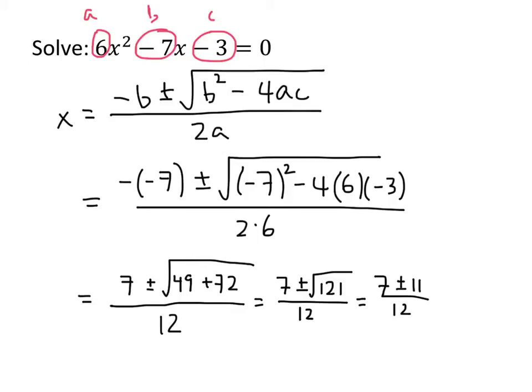That gives us two answers. One of them is 7 plus 11 divided by 12. 7 plus 11 is 18, 18 divided by 12 simplifies down to be 3 halves. So that's one of my solutions. And then 7 minus 11 over 12. 7 minus 11 is negative 4. Negative 4 over 12 simplifies down to be negative 1 third. So we get two solutions: positive 3 halves and negative 1 third.